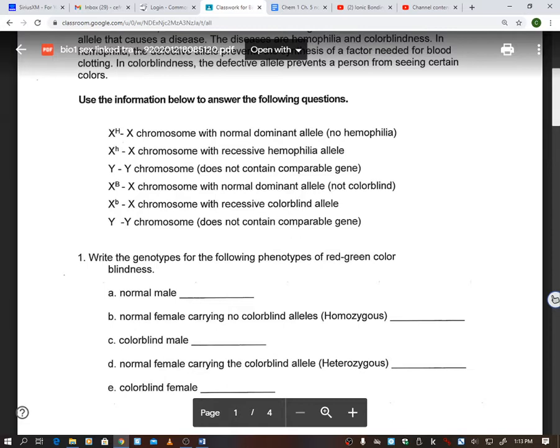Here is some information below, and we're going to use this to help answer questions. As soon as I see X capital H, that's a chromosome with a normal dominant allele, so you do not have the disease. If you have an X with a lowercase h, that has the recessive hemophilia allele, and you might have it. A Y chromosome, that's only your boys, and it does not have a gene for hemophilia. An X with a B, that is normal dominant allele. You are not colorblind. If you have an X with a lowercase b, then you have that recessive allele and you could be colorblind. And then a Y, once again, the Y is just for the boys and it does not contain a gene for colorblindness.